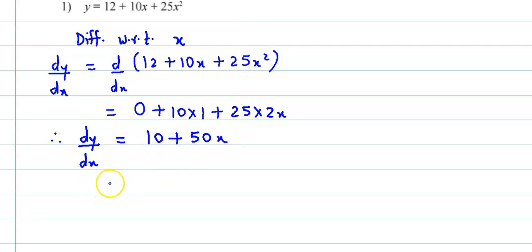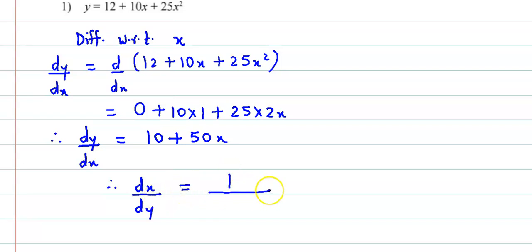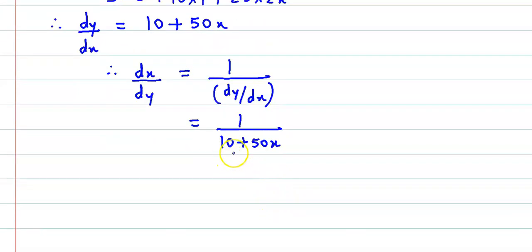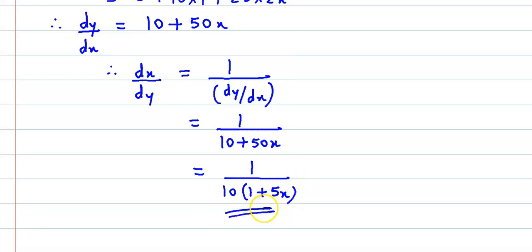dy by dx مل گیا اور ہمیں پوچھا گیا ہے dx by dy. We know that dx by dy is 1 upon dy by dx, where dy by dx is not equal to 0. So dx by dy مل جائے گا 1 upon 10 plus 50x. اگر ہم 10 common لیتے ہیں تو یہ آئے گا 1 upon 10 times (1 plus 5x). So this is dx by dy.